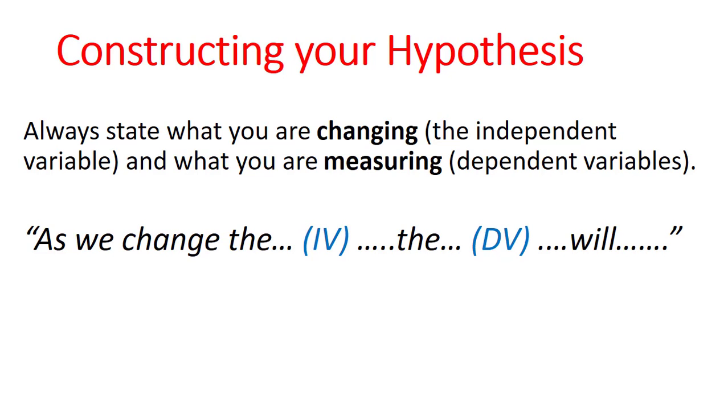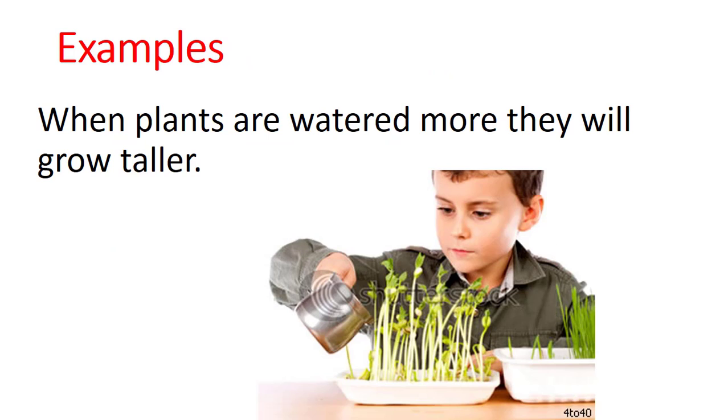Let's go through a few examples. Firstly, if we're going to water some plants, we might expect that they would grow. So when plants are watered, when they're watered more, they will grow taller. Okay? The independent variable, watering the plants compared to not watering them, and they will grow taller. Something we can measure in centimeters, the dependent variable.